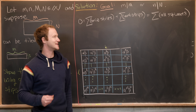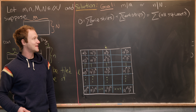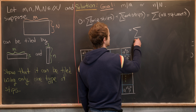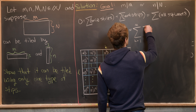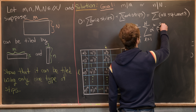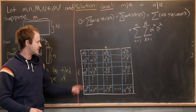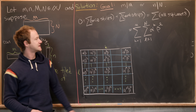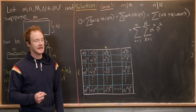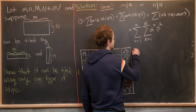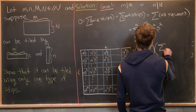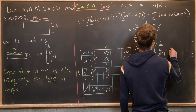Zero equals the sum over all squares in the rectangle, which we can write as a double sum: the sum as K goes from 1 to capital M of the sum as L goes from 1 to capital N of alpha^K times beta^L. Since the power of alpha depends only on K and beta only on L, we can factor this into two separate sums being multiplied.